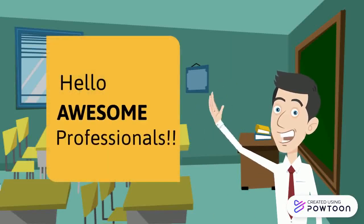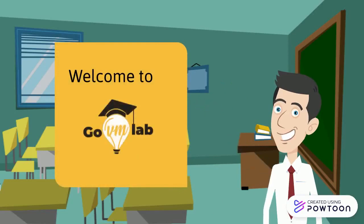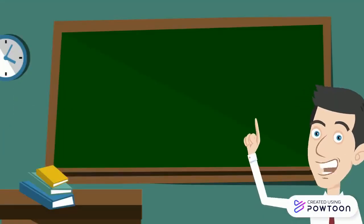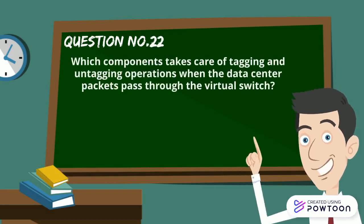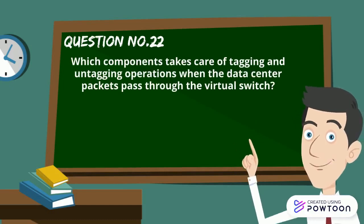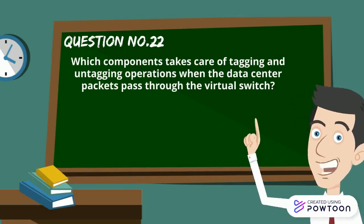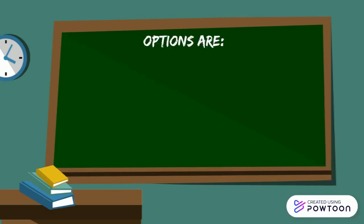Hello awesome professionals, welcome to GoVM Lab questionnaire-based learning. Here is question number 22: which component takes care of tagging and untagging operations when the data center packets pass through the virtual switch? Your options are: A) vNIC, B) vmnic, C) vmknic, and D) pNIC.